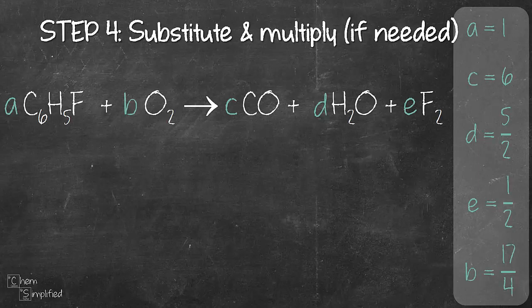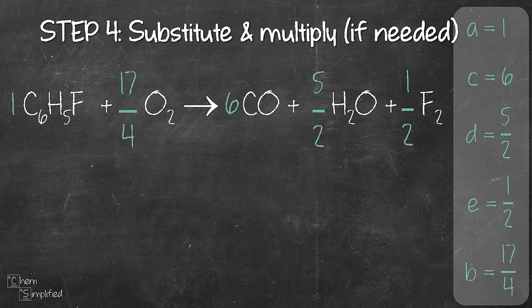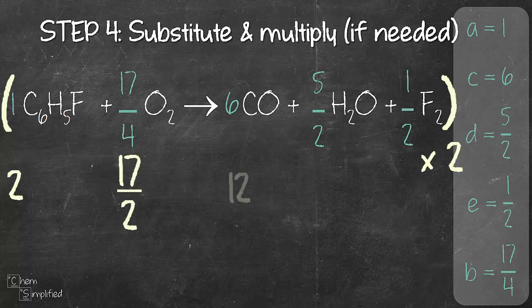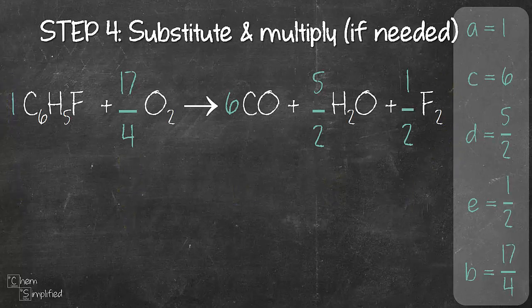So the final step is we'll need to substitute in the values that we have found for A to E. If there is no fraction or decimal, we're considered done. But since we have a bunch of fractions, we'll need to multiply the entire equation with the smallest number that will produce a whole number for every term. So let's consider the possibilities. If we multiply all terms with 2, we will get 2 in front of C₆H₅F, 17 over 2 for O₂, 12 for CO, 5 for H₂O, and 1 for F₂. Well that's not good because we are still left with one fraction for O₂.